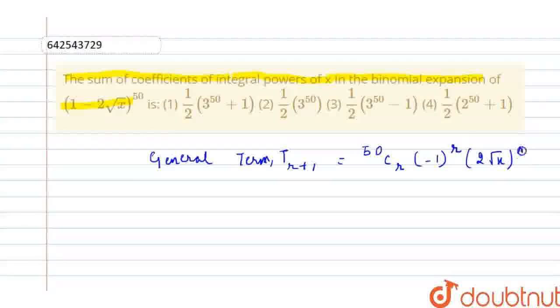This is basically the general term for the expansion of (1-2√x)^n, where n is 50.